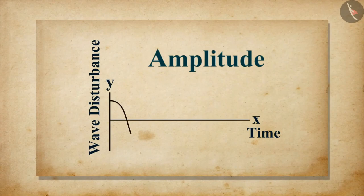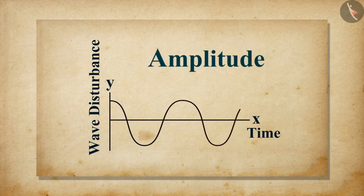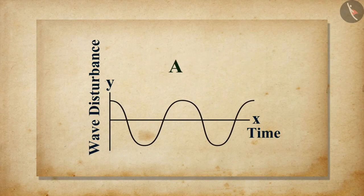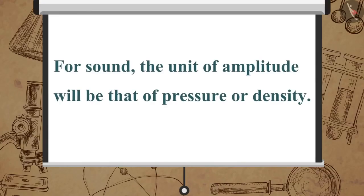The magnitude of the maximum disturbance in the medium on either side of the mean value is called the amplitude of the wave. It is denoted by A. For sound, the unit of amplitude will be that of pressure or density.